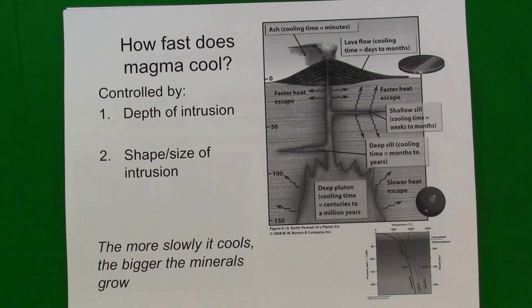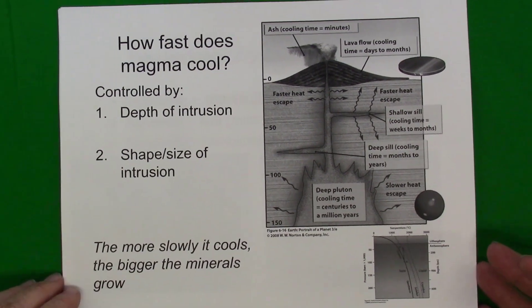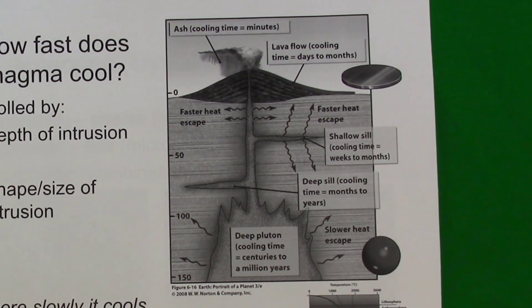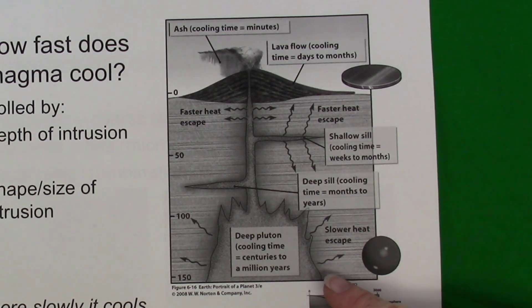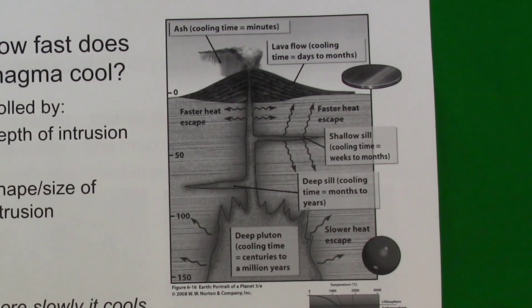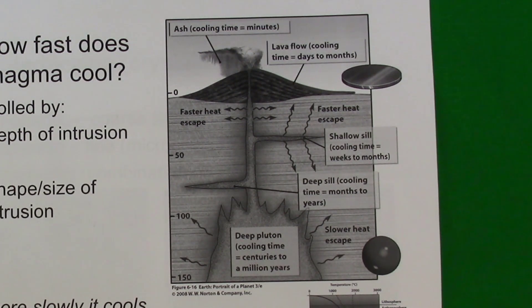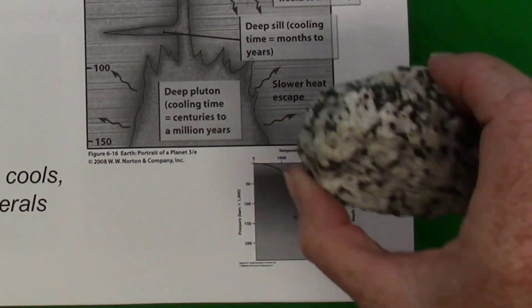The size of the minerals in igneous rocks is determined by how fast the magma or lava cools. Deep in the earth, where the surrounding country rocks are warmer, the magma body is insulated so the heat escapes more slowly and the minerals have time to grow larger. A very large, deep pluton might take centuries or even a million years for the minerals to completely crystallize, and that allows the minerals to get quite large, like in this rock.